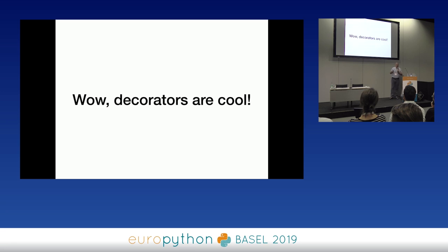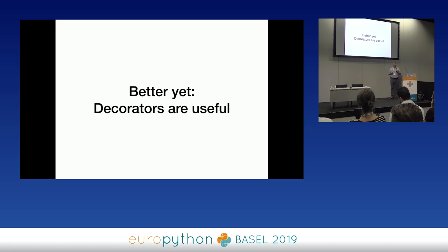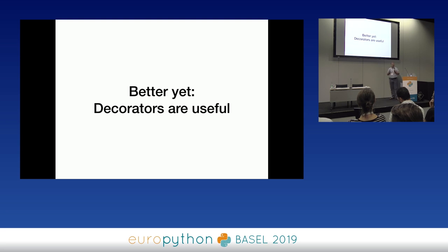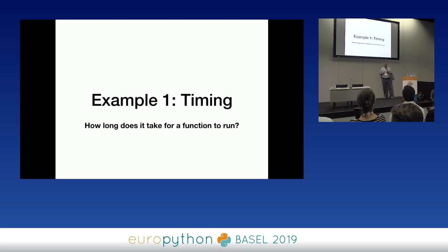Sometimes you see something and you think, that is super cool, but where would I use it? Is it a solution looking for a problem? No — decorators turn out to be useful. Whenever you have code that might repeat itself inside functions or classes, you can extract it, refactor it, turn it into a decorator, and have something generalizable and usable all over the place. I want to show you five different examples to get you thinking in the mode of decorators. First example: timing.